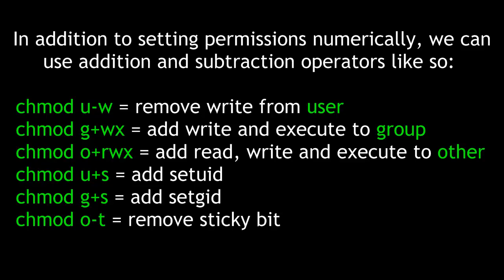Special permissions can also be modified this way. chmod u+s adds the set UID. chmod g+s adds the set GID. And chmod o-t removes the sticky bit.